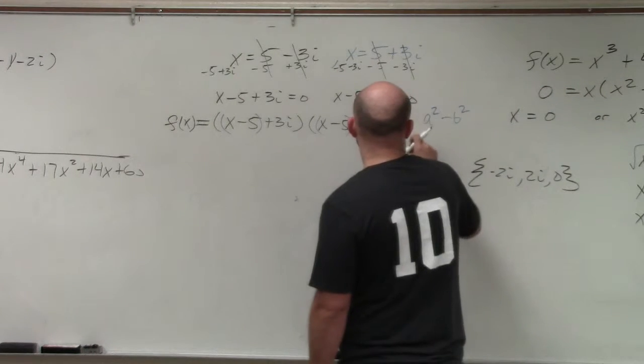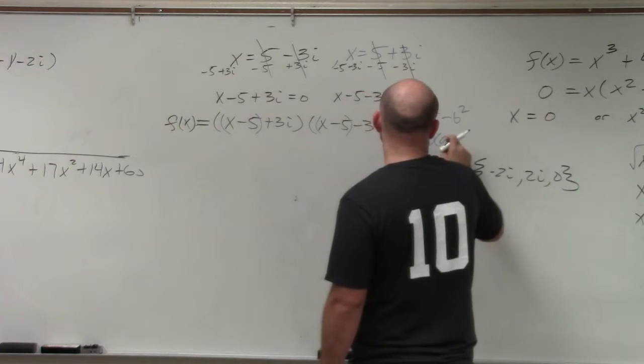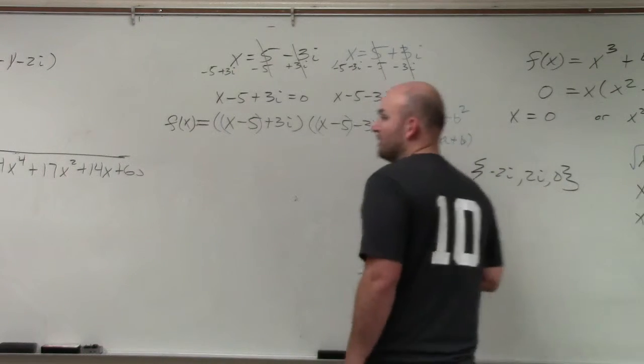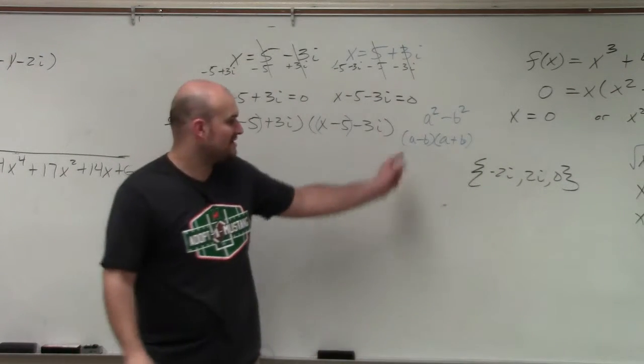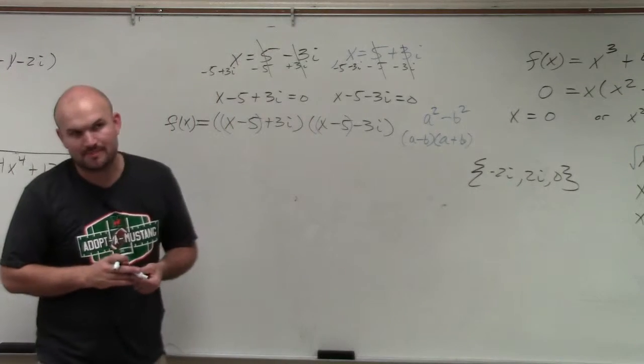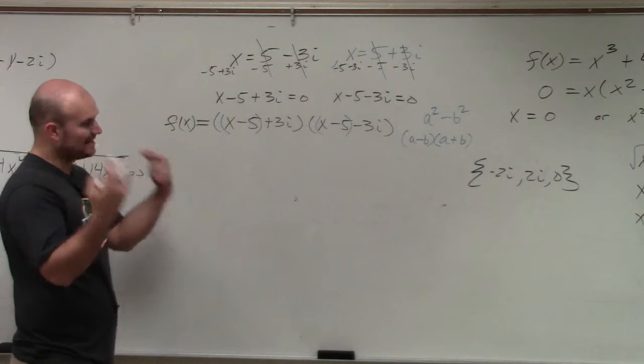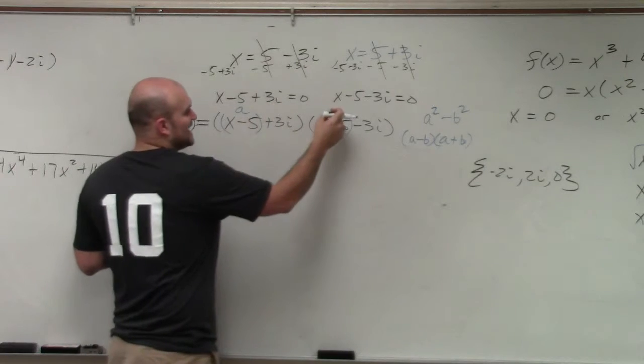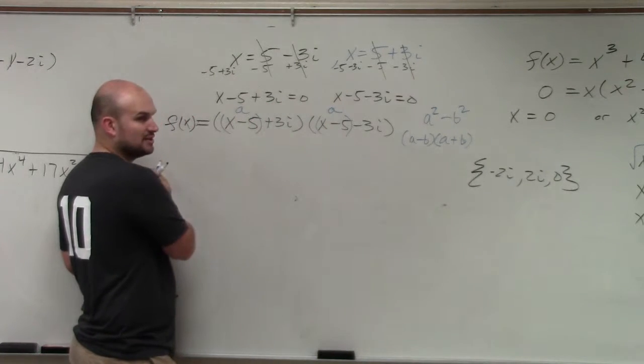Well, difference of two squares, the reason why it's so important is because when you have a squared term minus another squared term, you can easily factor that into a minus b times a plus b. So what I want you guys to kind of recognize here is x minus 5 is the same for both of my two factors. Would you guys agree?